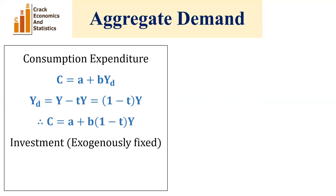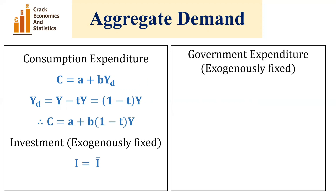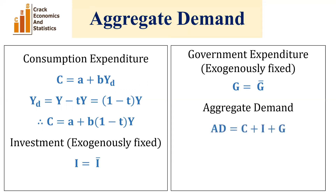The second component is investment, which is exogenously fixed, so I equals I-bar. Similarly, the third component is also exogenously fixed — government expenditure — so G equals G-bar. Therefore, aggregate demand AD equals consumption expenditure plus investment expenditure plus government expenditure, which gives us AD equals a plus b(1 minus t)Y plus I-bar plus G-bar.